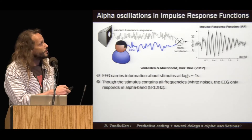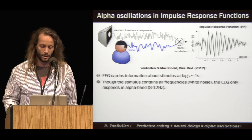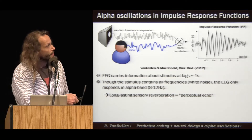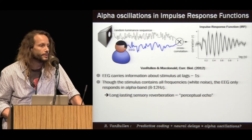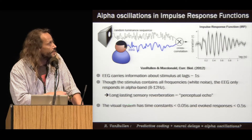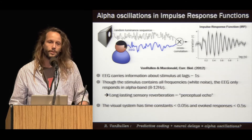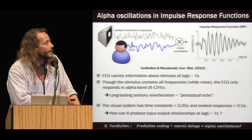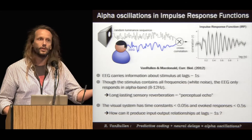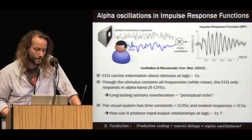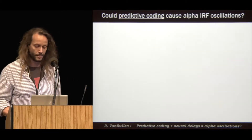Even though the stimulus contains all frequencies because it is white noise, the EEG will only and selectively respond in the alpha band around 10 hertz. This is like a long-lasting reverberation of sensory information, and that's why we call this a perceptual echo. What's remarkable about these perceptual echoes is that neurons in the visual system have typical time constants of only 20–30 milliseconds, and evoked brain responses only last about 200–300 milliseconds. So how can the visual system produce input-output relationships at lags of up to one second? I'm asking about the computational mechanisms responsible for these perceptual echoes, and the possibility I want to discuss today is that these alpha oscillations could be a signature of predictive coding mechanisms in the brain.